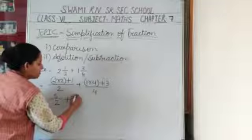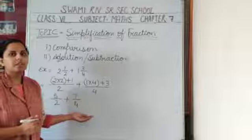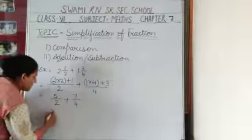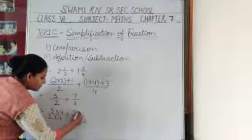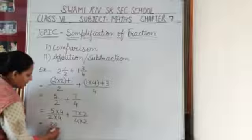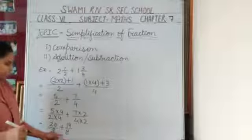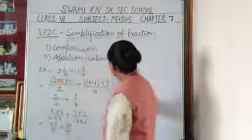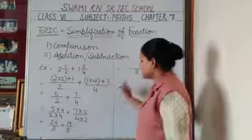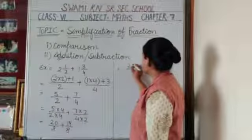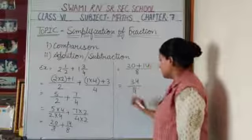Now the denominators are not the same, so we make a cross multiply. The first number is multiplied by the second denominator and the second number is multiplied by the first denominator. So 5 × 4 = 20, 4 × 2 = 8, and 7 × 2 = 14, 4 × 2 = 8. The denominators are now the same. The denominator of the answer is 8, and we add the numerators: 20 plus 14 = 34, giving 34 upon 8.